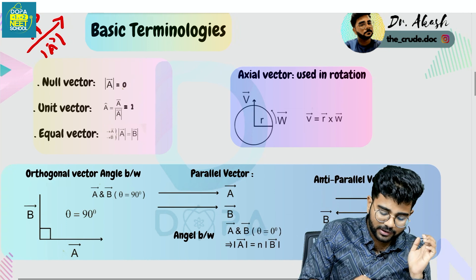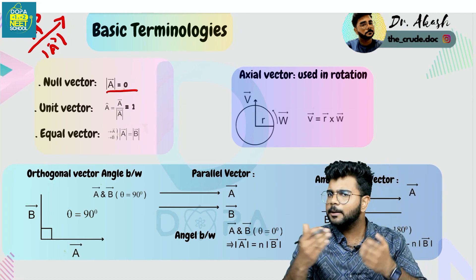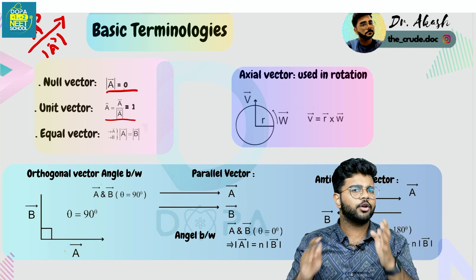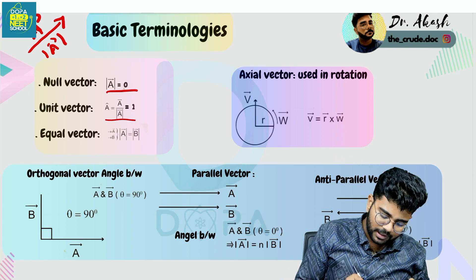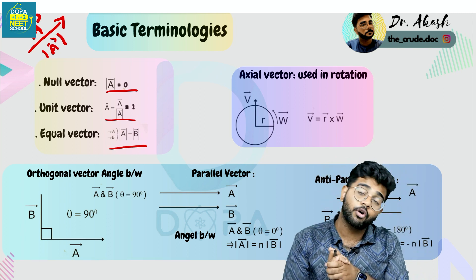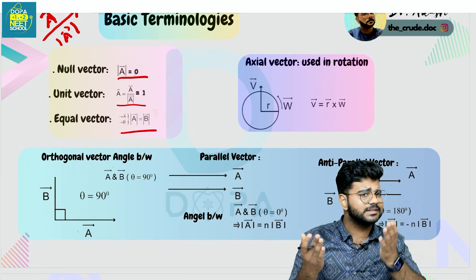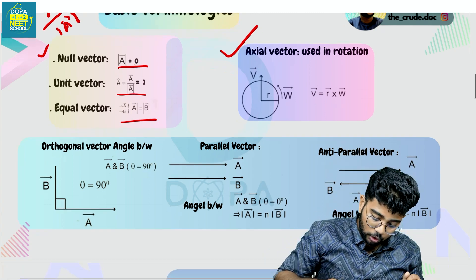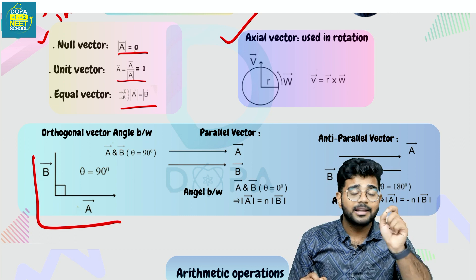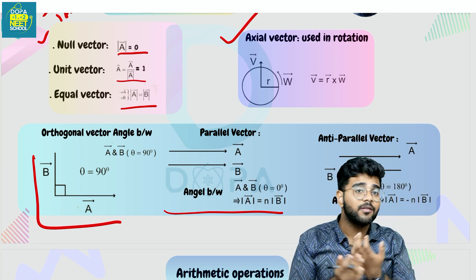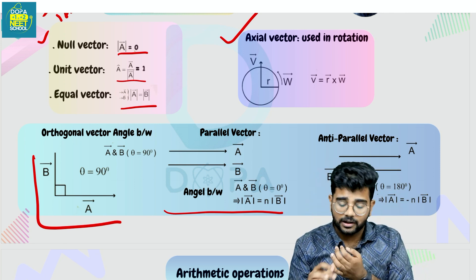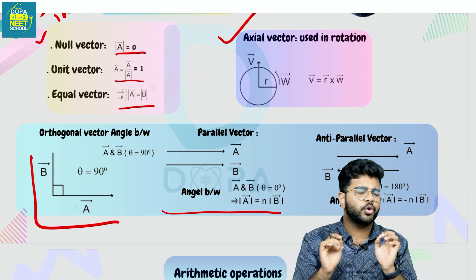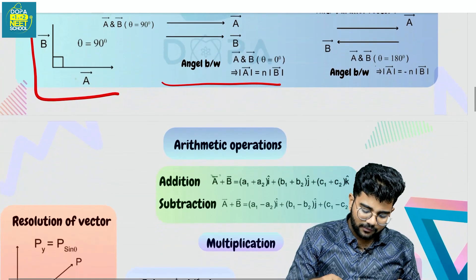What is a null vector? A null vector has magnitude zero. There are different types of vectors. Equal vectors have the same magnitude and the same direction. Axis vectors relate to rotation. Orthogonal vectors are at 90 degrees. Parallel vectors go in the same direction. Antiparallel vectors are 180 degrees apart — they are in opposite directions. These types of vectors are very important.